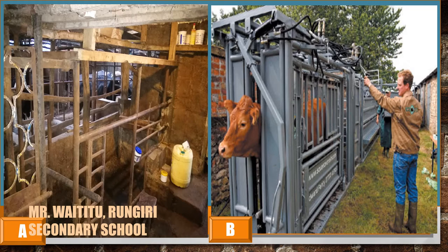B is specialized. Most of the time we use it in large-scale farming, and that is why it looks a little bit more modern. So in small scale we use A, and in large scale we use B.